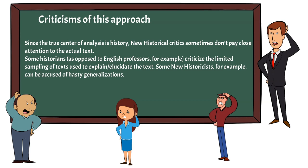Some new historicists can be accused of hasty generalizations. Criticism is coming from two poles: from literary scholars connected to new criticism who believe the text itself has a certain integrity and not the history around it, and from historians who say that new historicists use history but not as historians do — sometimes taking a small detail in a historical text and over-generalizing it.